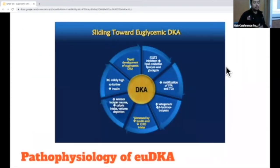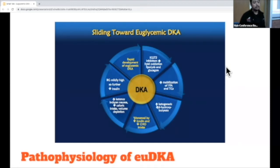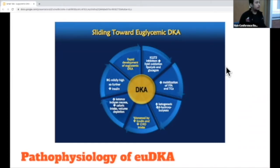Essentially, with the use of SGLT2 inhibitors causing increased glucosuria, they're going to lead to a decrease in insulin as well. The decrease in insulin is then going to lead to a series of events that will eventually lead to an increase in free fatty acids, increase in lipolysis, and eventually an increase in beta-oxidation that leads to the ketogenesis that can cause ketoacidosis. As you see here in this graphic, it creates this chain of events where with the increase in ketogenesis, the patient will also start to become symptomatic, will also probably have associated decreased carbohydrate intake, nausea, vomiting, which will just keep exacerbating the decrease in glucose and the decrease in insulin and eventually lead to severe DKA.